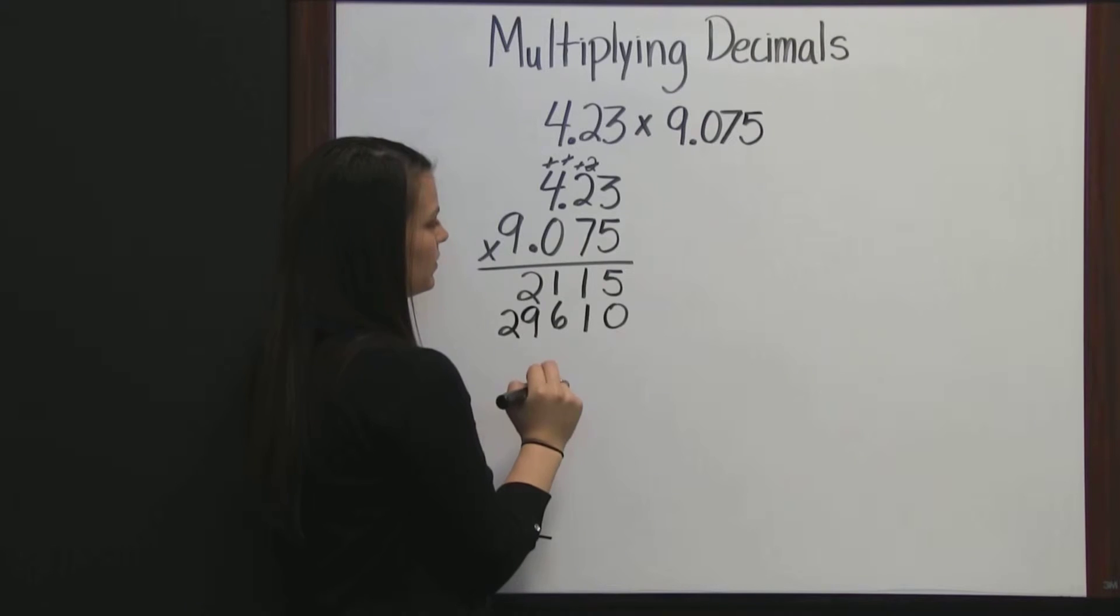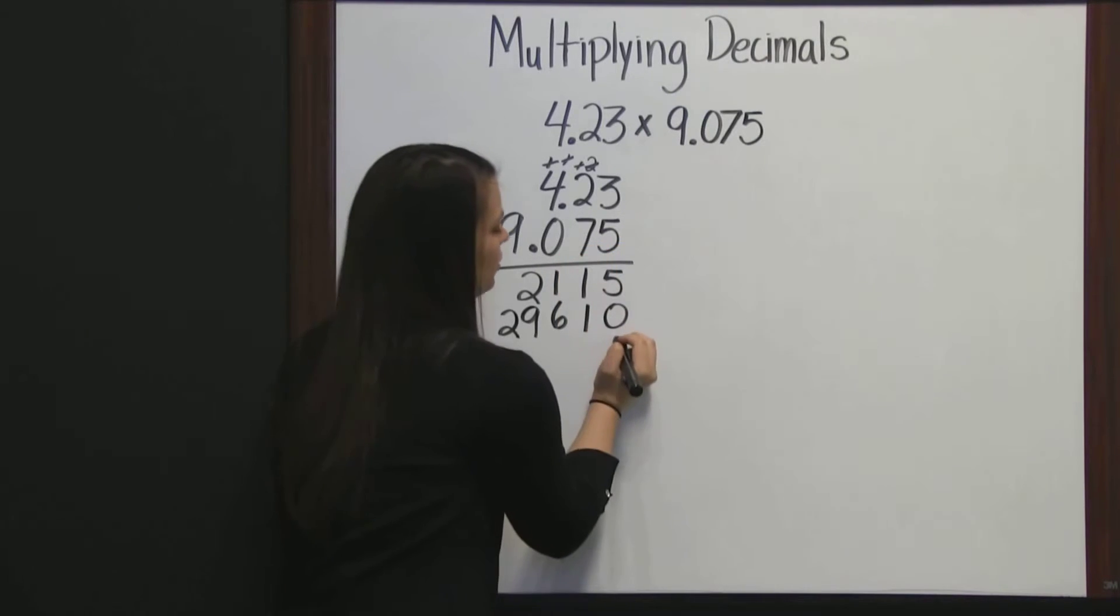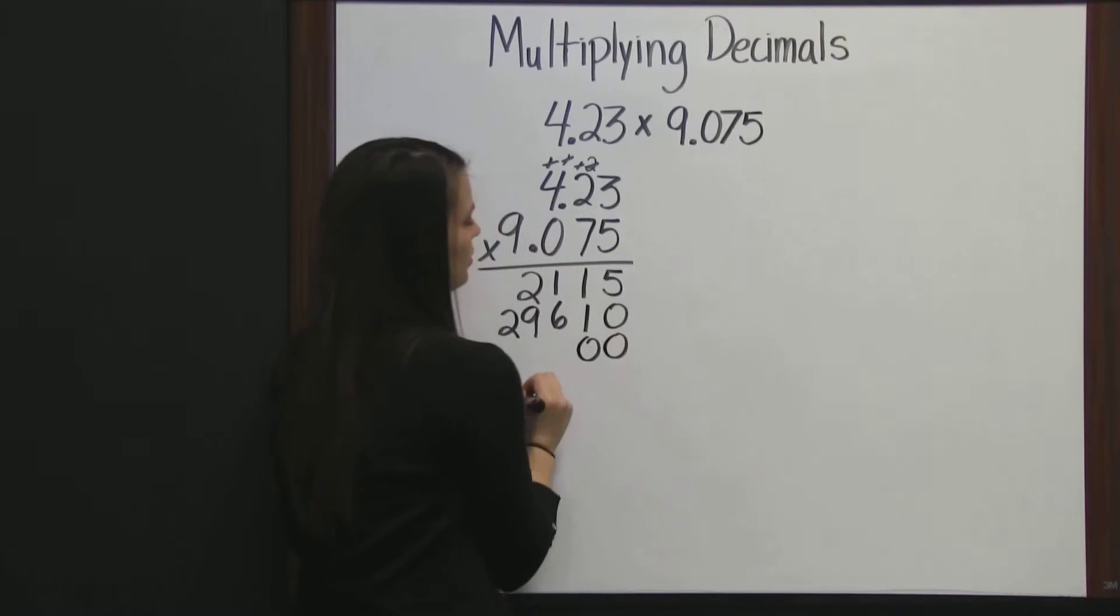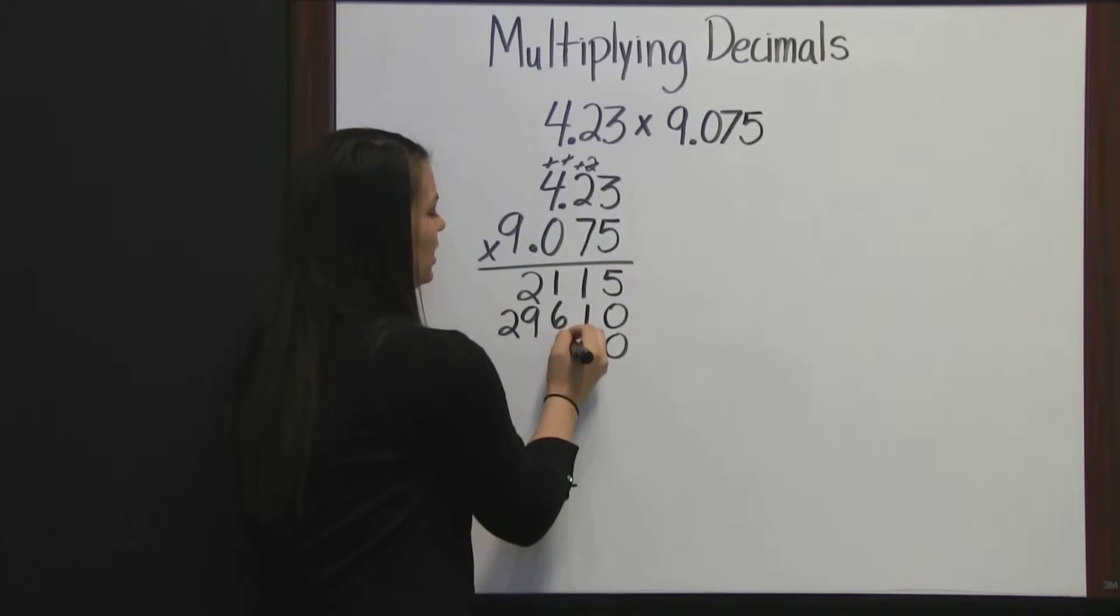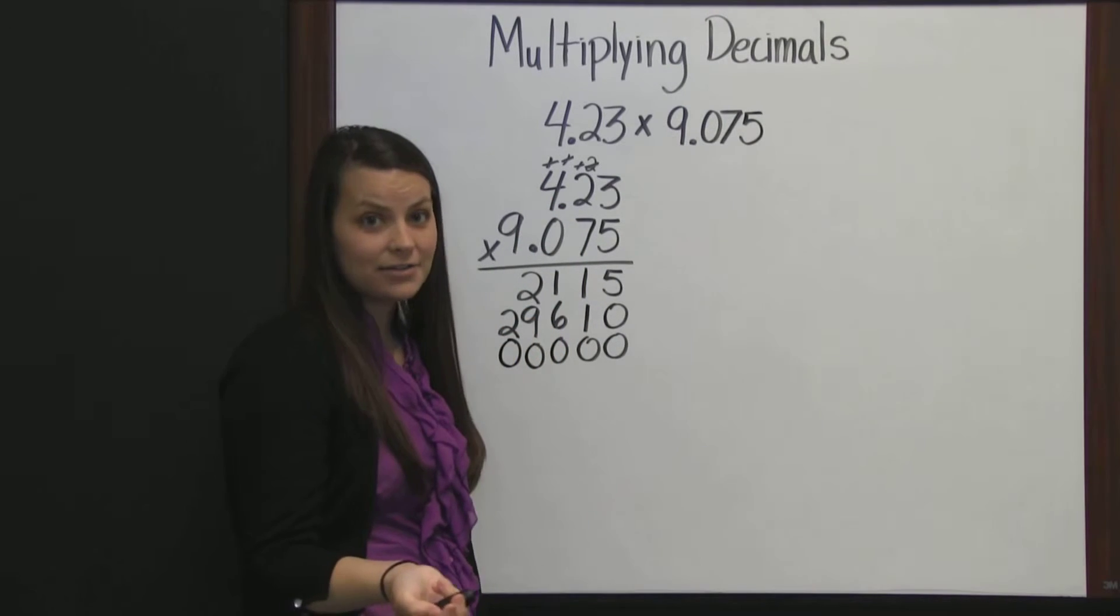Get rid of those. Then we need 2 zeros for placeholders. When we multiply times 0, 0 times 3 is 0, 0 times 2 is 0, and 0 times 4 is 0. We just get a line of zeros.